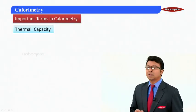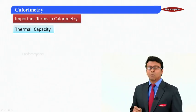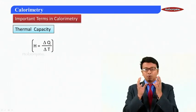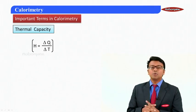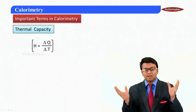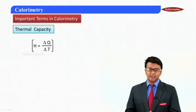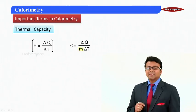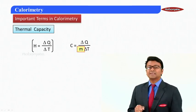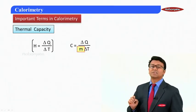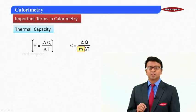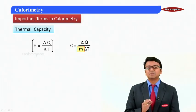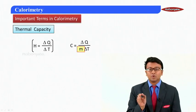The first term we will encounter is thermal capacity. Thermal capacity is defined as the amount of heat required to raise the temperature of the entire body by 1 degree centigrade. Comparing this with specific heat capacity — that is the amount of heat required to raise the temperature of unit mass of a substance by 1 degree. The key difference is that thermal capacity applies to the entire body while specific heat capacity applies to a unit mass.